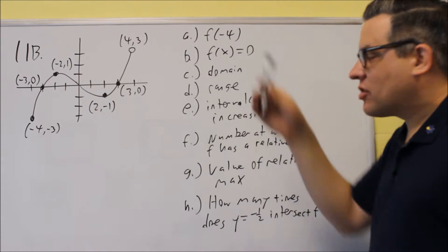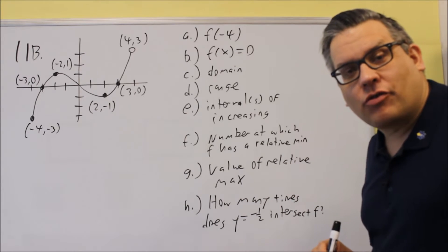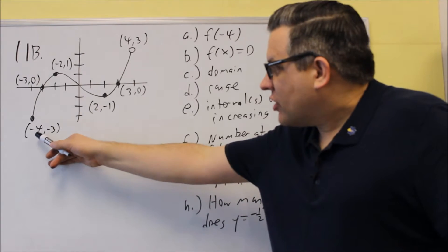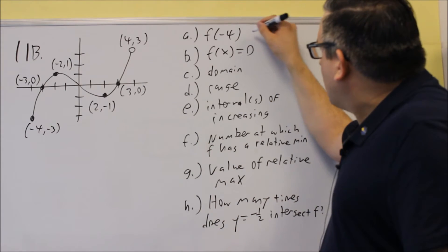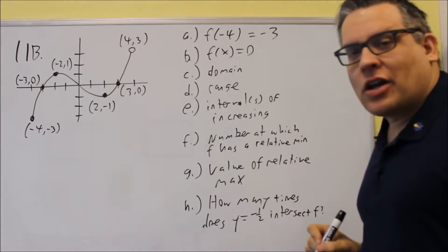So again, what this is asking you for is find the y value when x is equal to -4. Here's -4. The y value would be -3. So we're going to put equals -3 for that one.